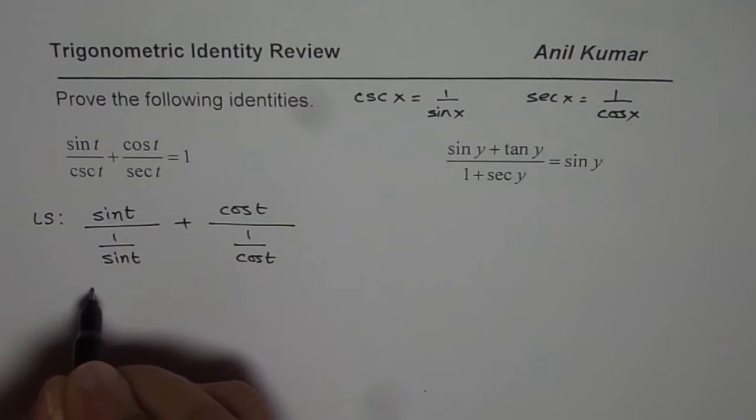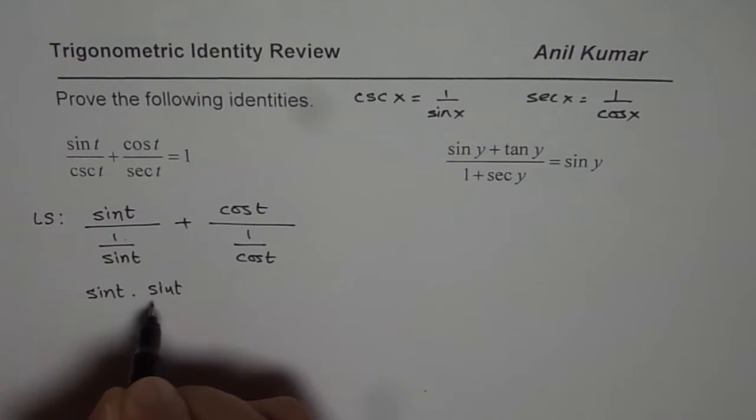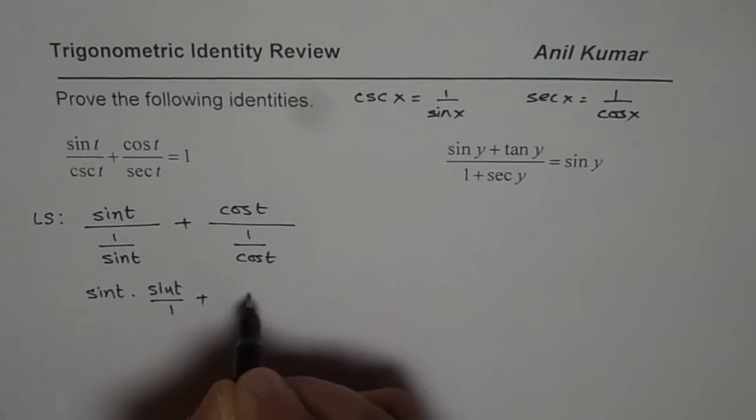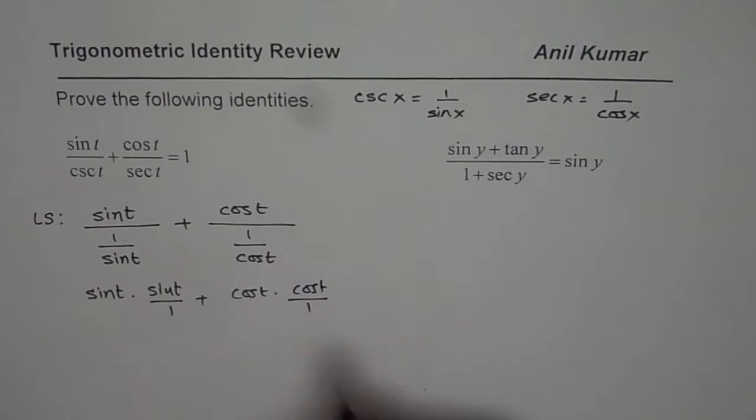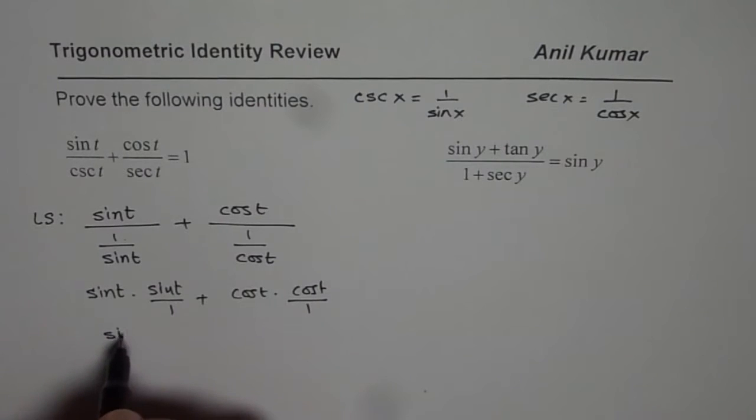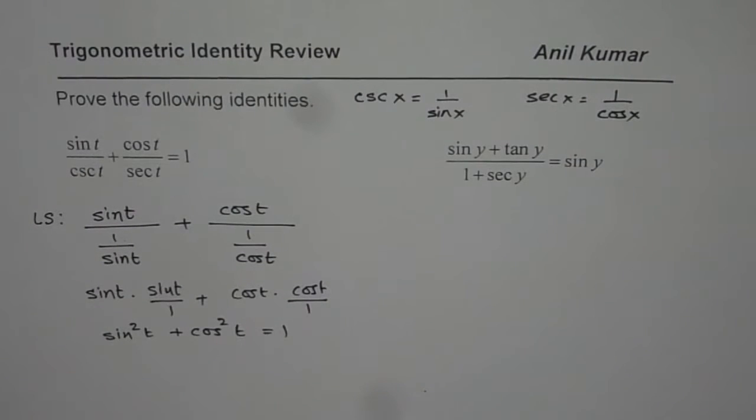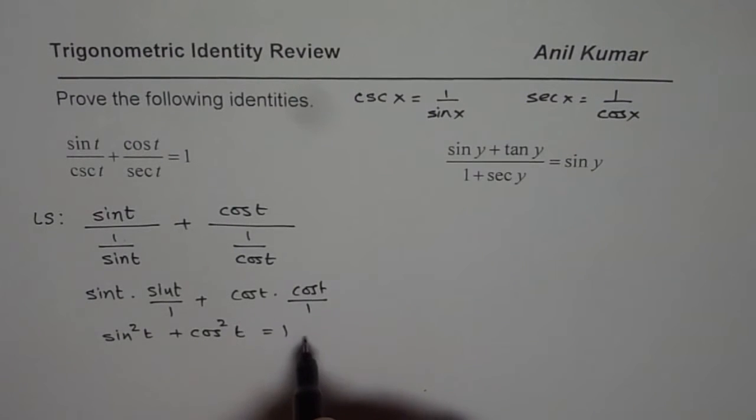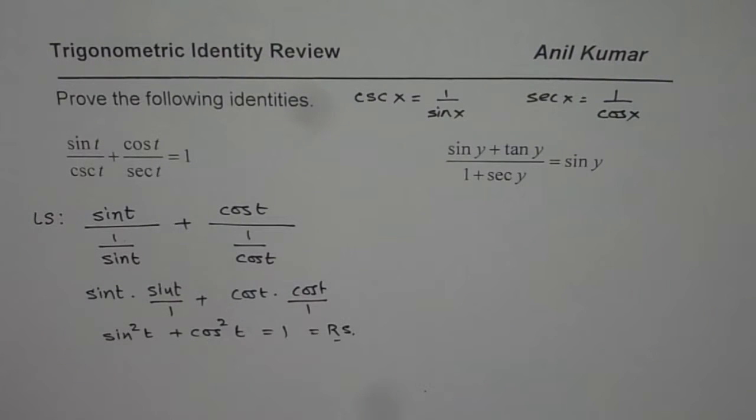Now that could be written as sine t times sine t over 1 plus cos t times cos t over 1. Clearly, this is sine square t plus cos square t, and you know the Pythagorean identity, sine square x plus cos square x is 1. Therefore, this is equal to 1, and that is right side. So we have proved that left side is equal to right side, and therefore this identity has been proven.